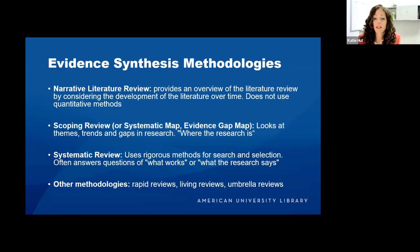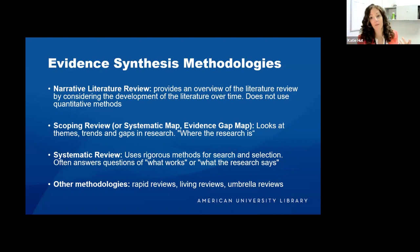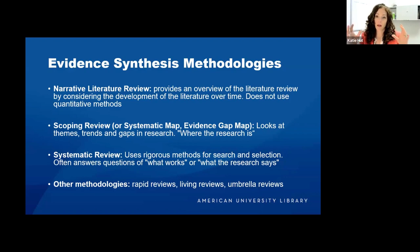Systematic reviews use rigorous methods for search and selection, and they will often answer a question like 'what works' or 'what does the research say.' Other methodologies include the rapid review, which can compromise precision and comprehensiveness in order to get the review out very quickly.